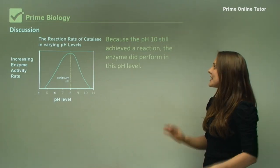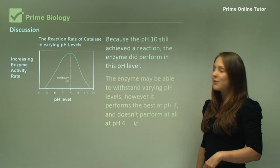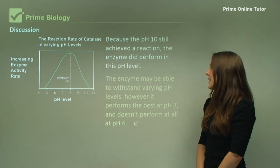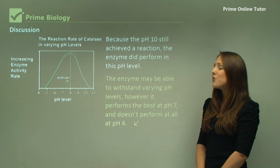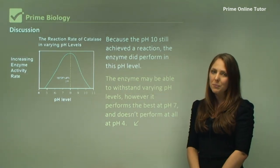Because the pH 10 still achieved a reaction, the enzyme did perform in this pH level. The enzyme may be able to withstand varying pH levels; however, it performs the best at pH 7 and doesn't perform at all in pH 4.